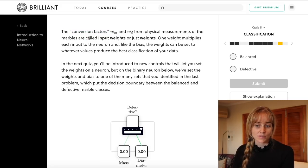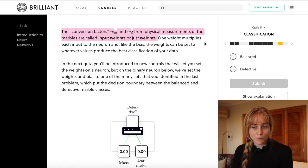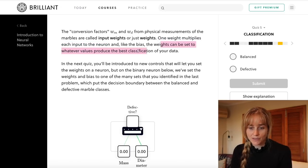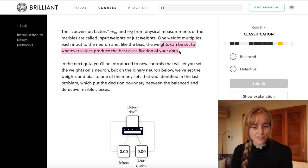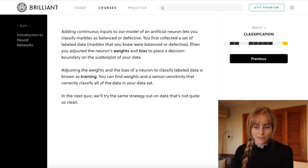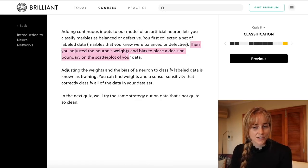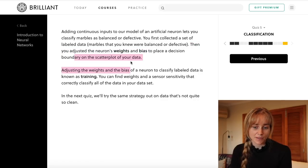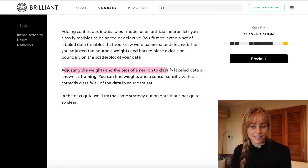Now what's important here is that these conversion factors, these wm and wd, are actually called the input weights or often just the weights. One weight multiplies each input to the neuron. Weights can be set to whatever values produce the best classification of your data. Throughout this little quiz here we've been adjusting the neurons weights and bias to place a decision boundary on the scatter plot. It says that adjusting the weights and bias of a neuron to classify labeled data is known as training.